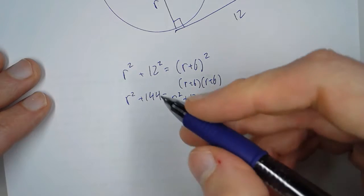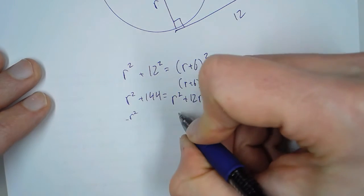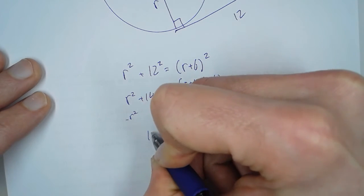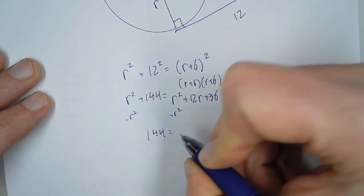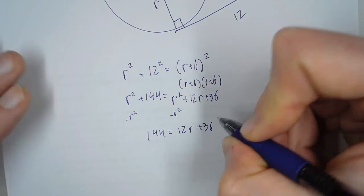Now we can cancel out the R squareds, so we're left with 144 equals 12R plus 36.